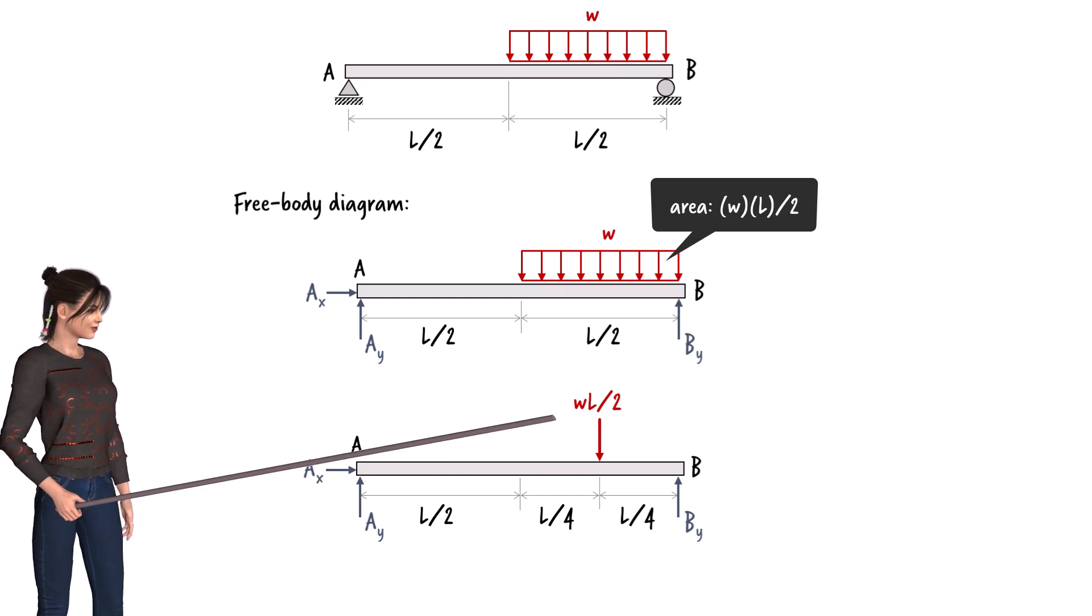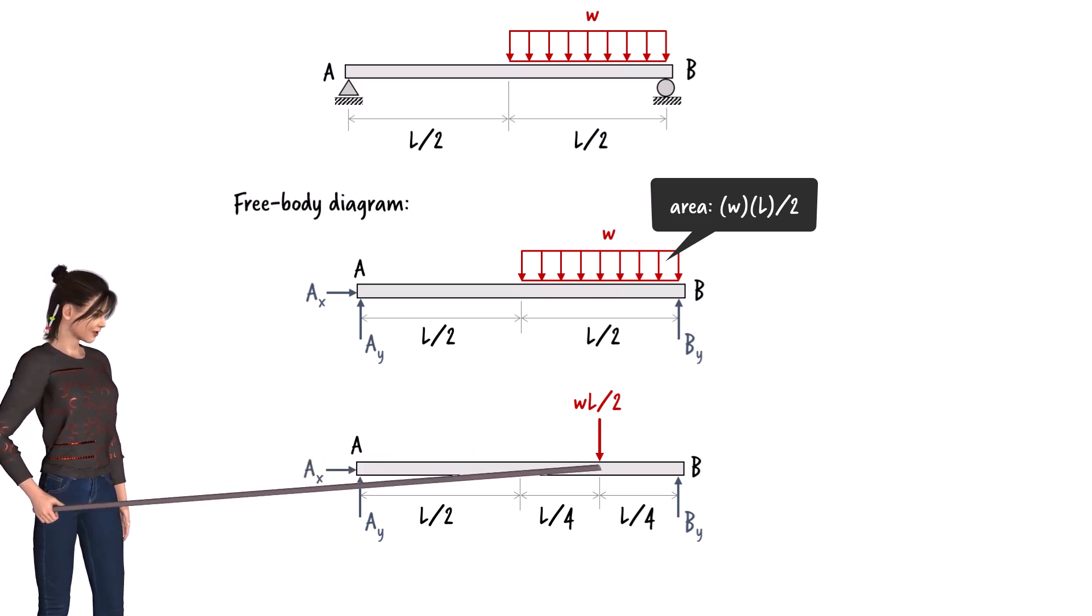So the point load representing the distributed load has WL over 2 as its magnitude. The point load must be placed at a distance L over 4 from the right end of the beam.